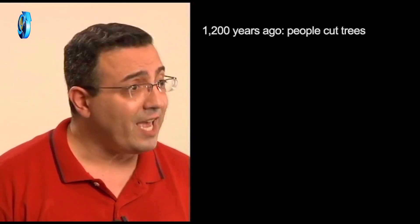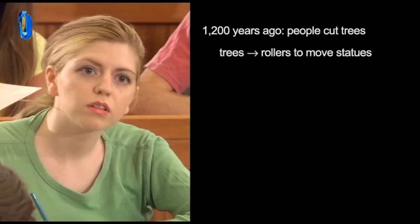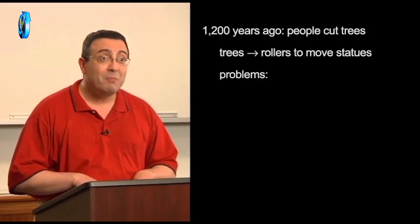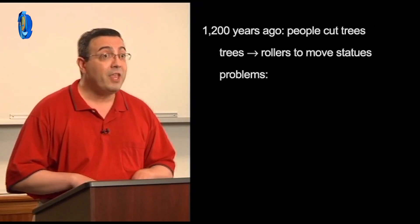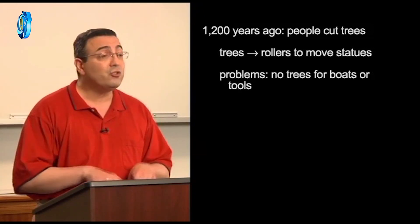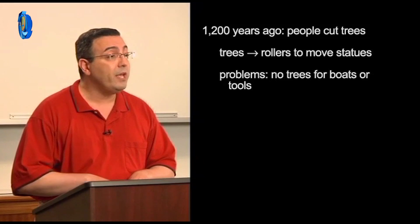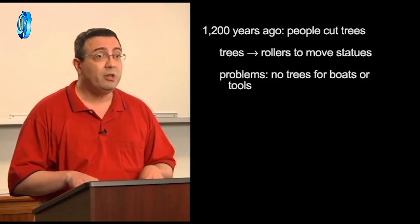About 1,200 years ago, the first people of Easter Island cut down all the trees on the island. They used the trees as rollers to move their statues. Can you guess what went wrong? Easter Island soon had major problems because the people had used up all of the trees. Without trees, they couldn't build boats for fishing or make tools for farming.